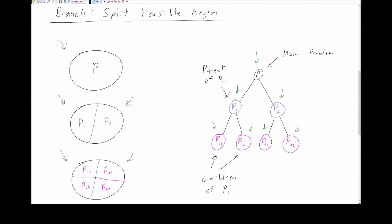We can think of this tree in terms of the subproblems in the branching procedure. A node is a parent of another node if it is a superset — for example, node P1 is a parent of P11 because P11 is completely contained inside P1. Vice versa, the children of a node are the sub-regions of that region. So for P1, the sub-regions are P11 and P12, making them the children of node P1. This is how we think about the branching process — it creates a tree denoting subset relationships between feasible regions.